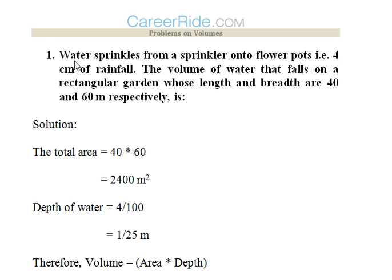The first question. Water sprinkler sprinkles the water on flower pots and fills the ground by 4 cm of rainfall. The volume of the water that falls on the rectangular garden whose length and breadth are 40 and 60 m respectively is, we need to find out the volume of the water.